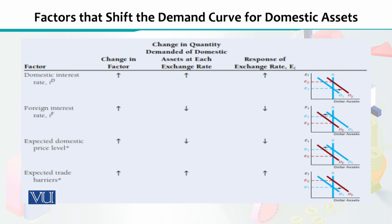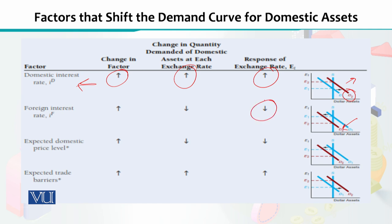There are a number of factors that can shift the demand curve. If the domestic interest rate increases, the quantity demanded of domestic assets goes up as well, and your exchange rate will also go up — observed as an upward shift in the demand curve. If the foreign country's interest rate increases, however, demand will shift backwards and as a result the exchange rate will decline.